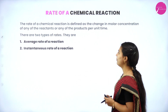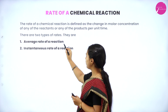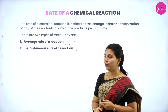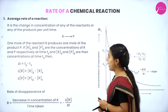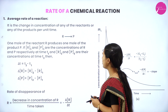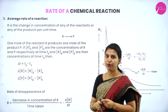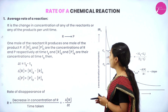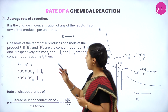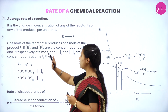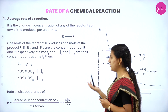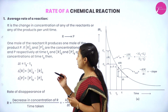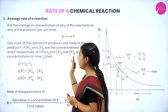There are two types of rates of reaction: average rate of reaction and instantaneous rate of reaction. Average rate of reaction is the change in concentration of any reactant or any product per unit time. Consider one mole of reactant R producing one mole of product P. If R1 and P1 are the concentrations of R and P at time T1, and R2 and P2 are the concentrations at time T2...